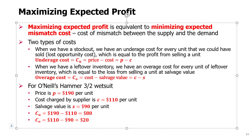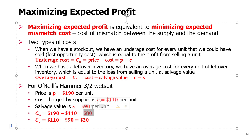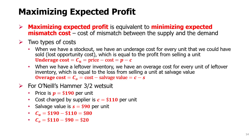On the other hand, if we have leftover inventory, that means we bought some units at cost C and we are only receiving salvage value S from those units. We call this an overage cost — the cost per each unit left in inventory at the end of the season. In the case of the Hammer 3-2 wetsuit from O'Neill's, the price is $190, cost is $110, and salvage value is $90. So the underage cost is $80 — the same as profit from every sold unit — and the overage cost is $20.